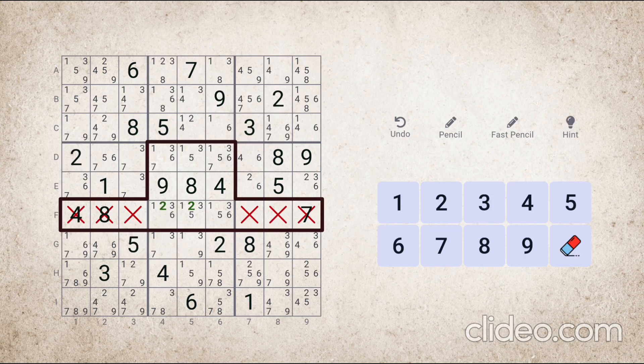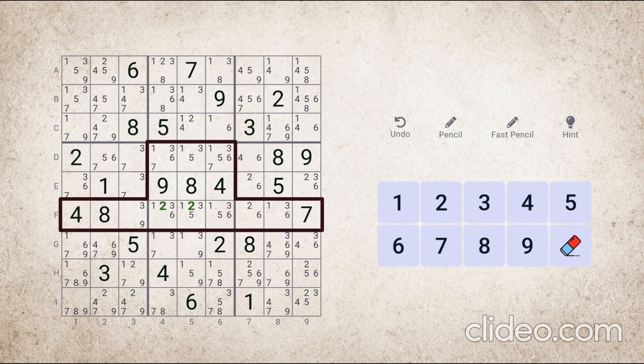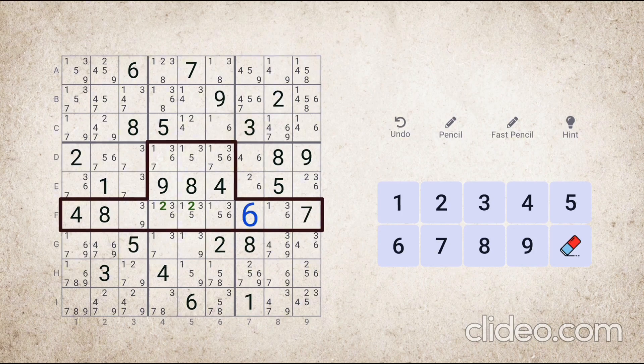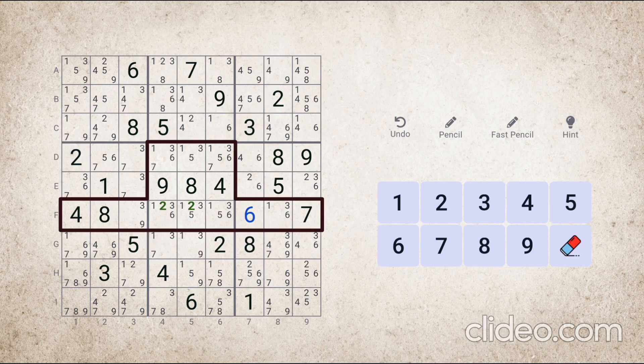Therefore, wherever number two is visible in all these cells, we can remove it without any mistake. For example, number two will be removed from this cell. And as a result, six will be placed here. And this cell will be solved.